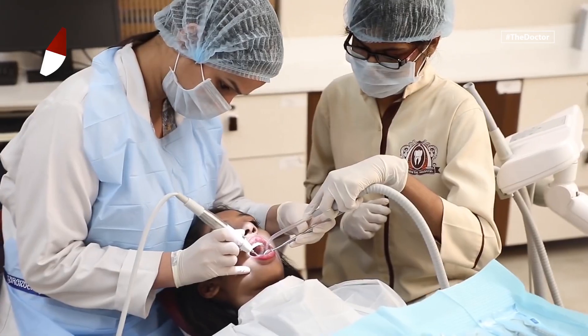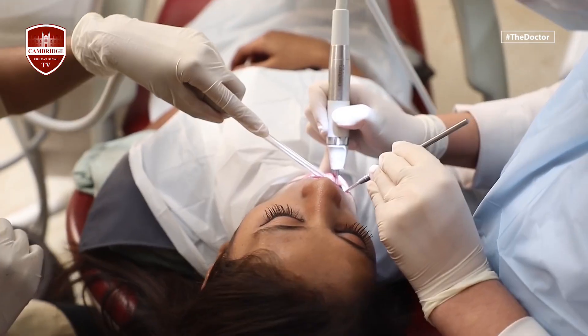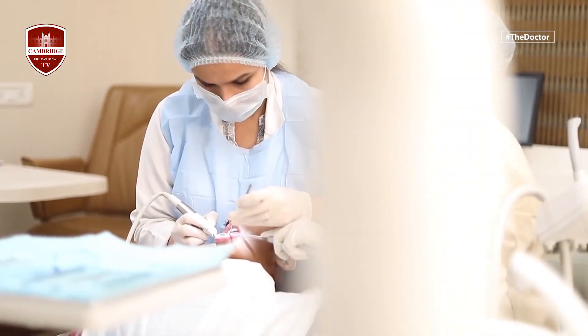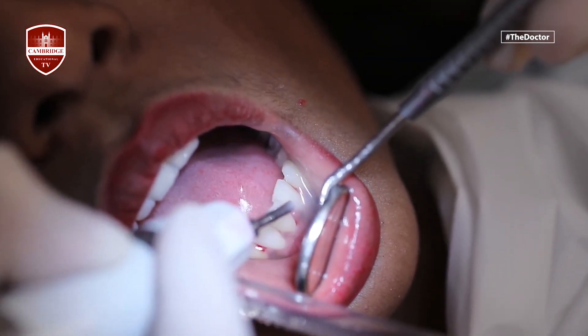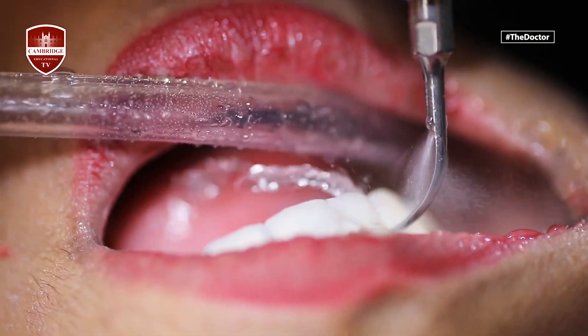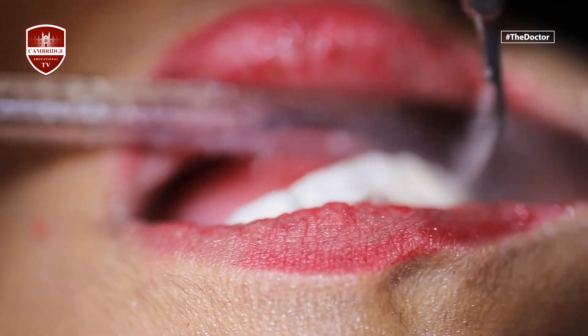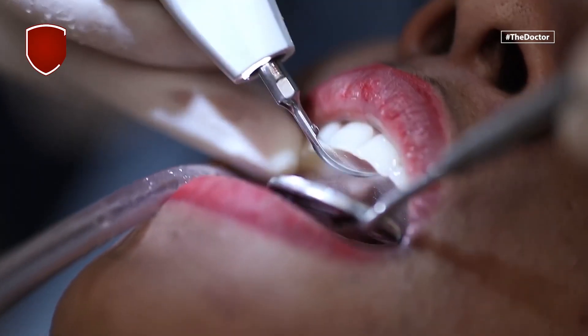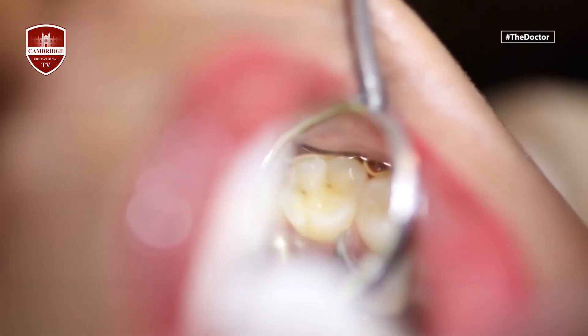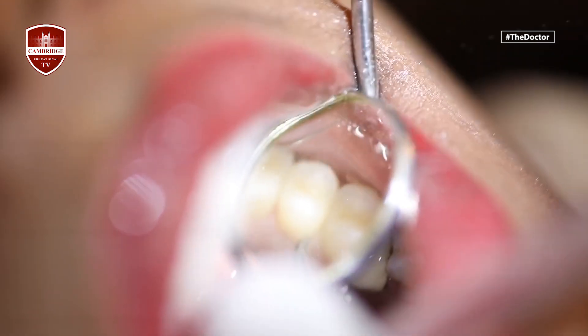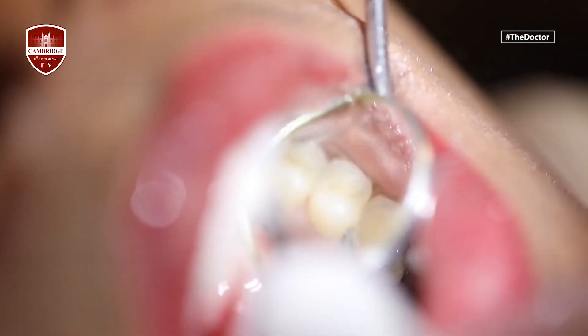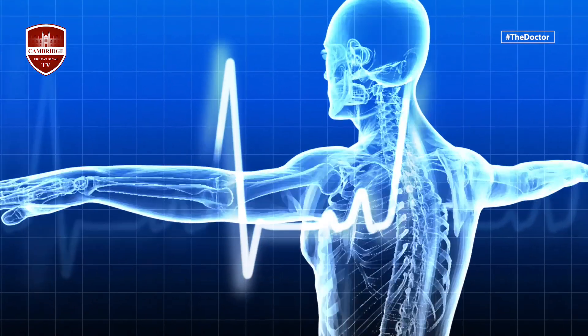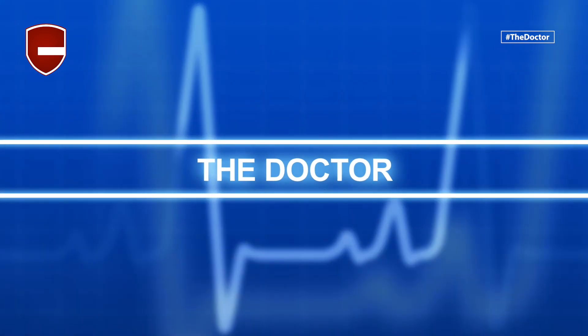The second step is to locate the entrances to the root canals. The number of root canals differs depending on which tooth is being treated — front teeth or back teeth. It is very important to locate all canals, because if I miss one, the treatment will fail. Some canals are very small and hard to detect, so I need clear visibility and the patient's cooperation.